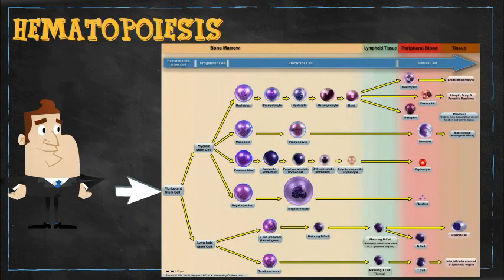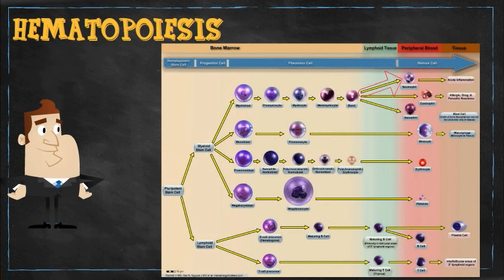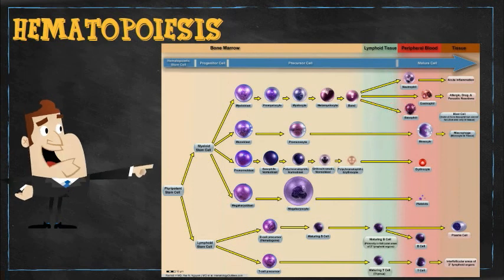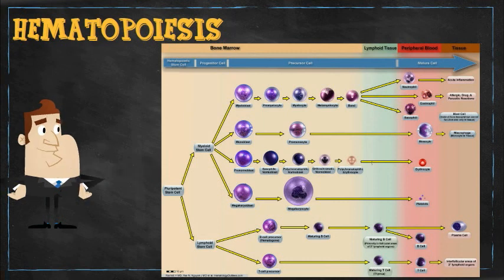The pluripotent stem cells become myeloid and lymphoid stem cells. The myeloid stem cells give rise to the granulocytic precursors, which ultimately become the neutrophils, eosinophils, and basophils, while the monocytic precursors become the monocytes. The myeloid stem cells also give rise to the red cell precursors, which ultimately become the mature red blood cell, and the megakaryocytic precursors, which ultimately give rise to platelets.